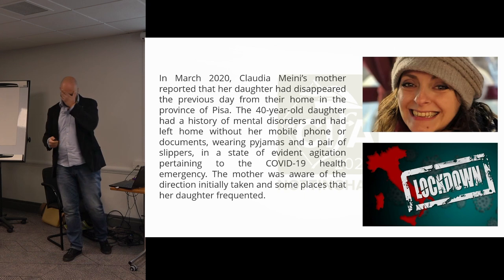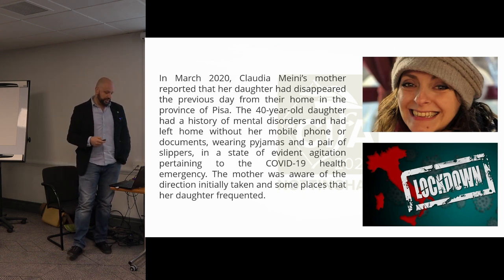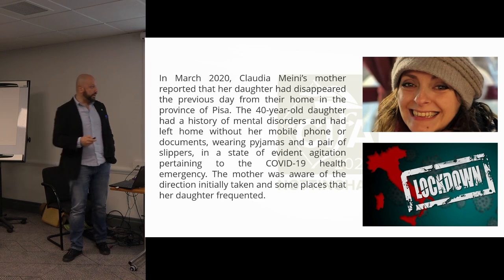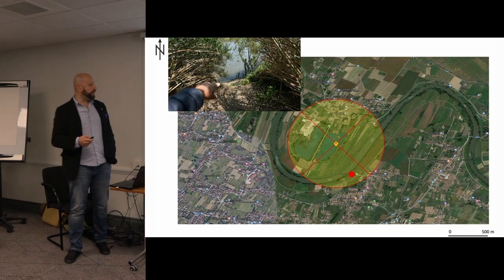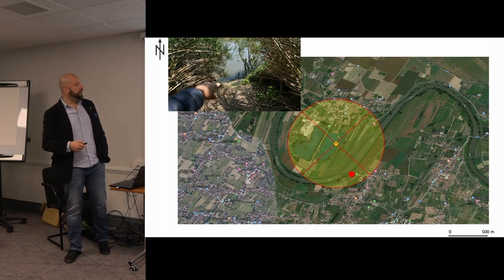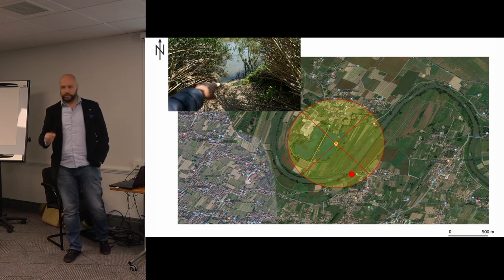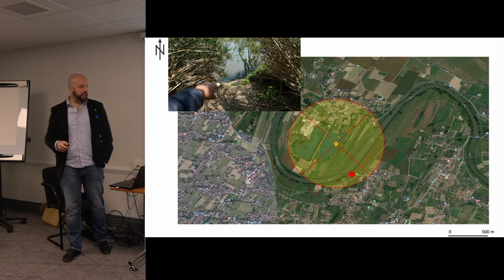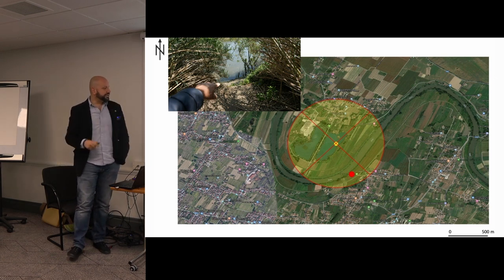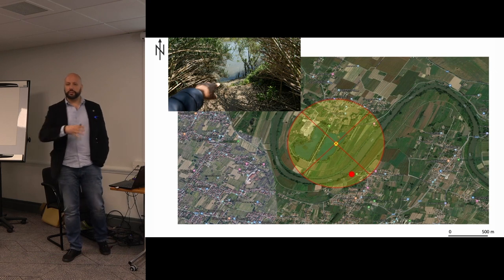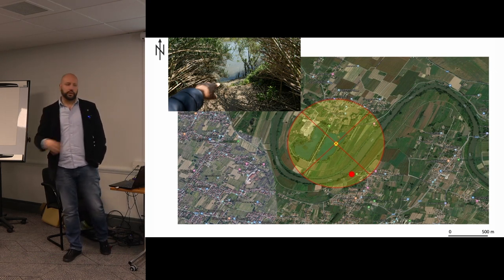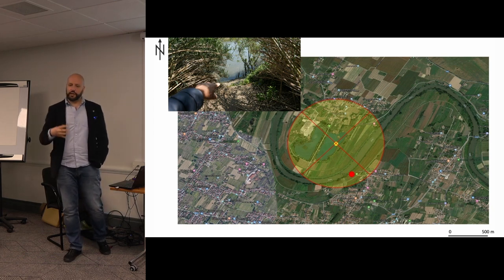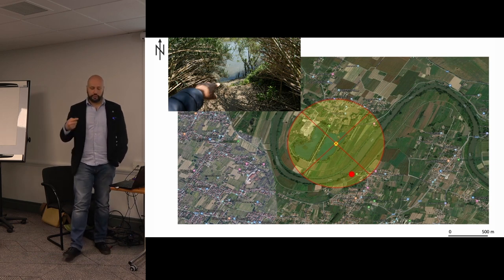This is an example from Italy where a person disappeared in March 2020, in the middle of the lockdown period. The locus operandi was applied to narrow down the search area. You can see the yellow area is the locus operandi with a central focus point shown as the yellow dot, and the person was found where you see the red dot. The diameter of this area is about one kilometer — not a big area. Normally when you start a search, you search randomly, spending a lot of time, people, and money without clues. Locus operandi can focus and narrow down the research area pretty well.